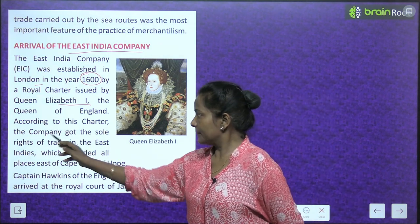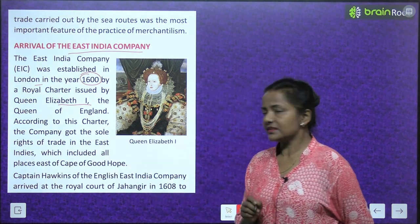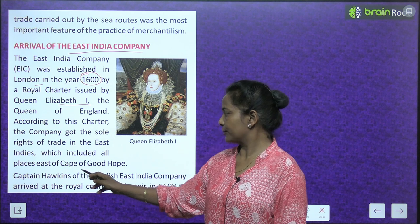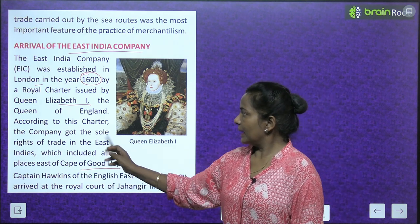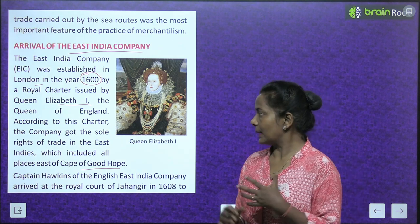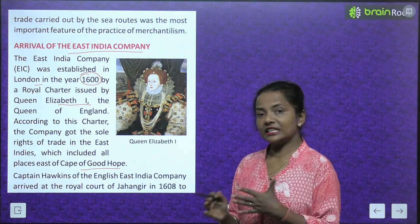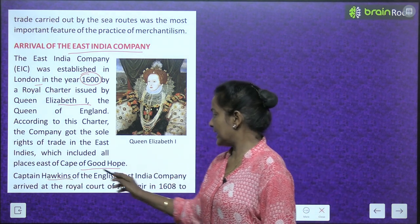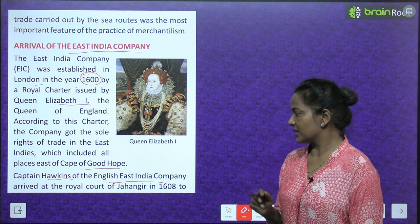According to this charter, the company got the sole rights of trade in the East Indies, which included all places east of Cape of Good Hope. In this charter, the company was given sole rights to trade in the East Indies. Captain Hawkins of the English East India Company arrived at the Royal Court of Jahangir in 1608.